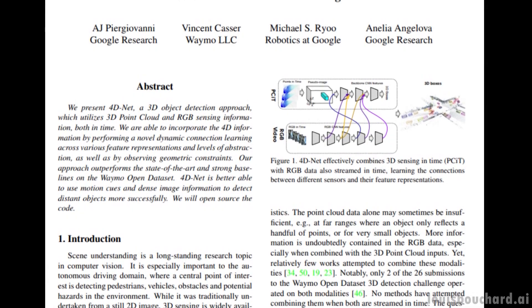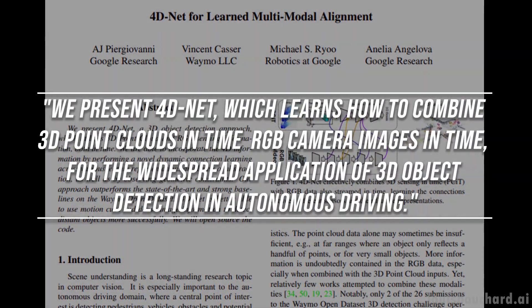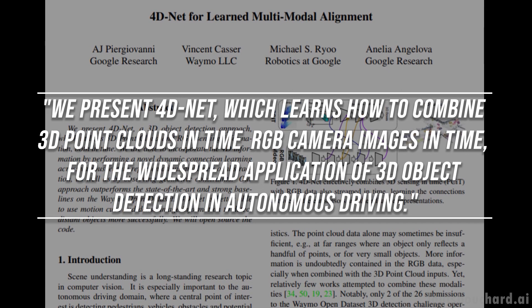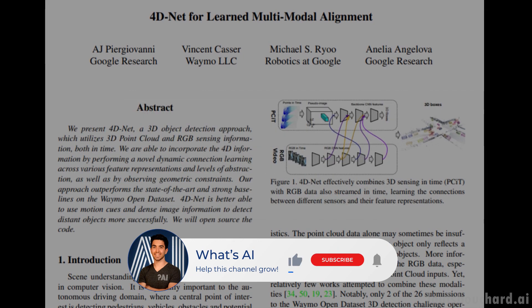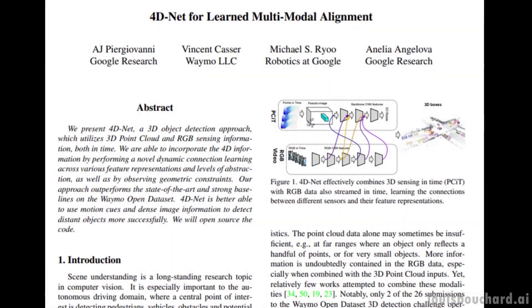I think I couldn't summarize the paper better than the sentence they used in their article. We present 4D-Net, which learns how to combine 3D point clouds in time and RGB camera images in time for the widespread application of 3D object detection in autonomous driving. I hope you enjoyed the video, please subscribe and I'm just kidding. Let's dive a little deeper into this sentence.